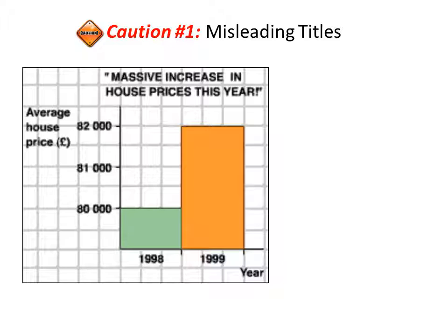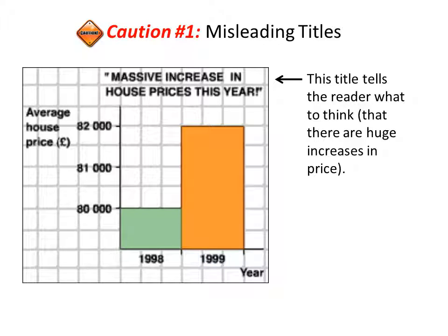The first caution is misleading titles. Take a look at this first graph — the title says 'massive increases in house prices this year.' This title is basically telling readers what to think: that there are huge increases in price. When constructing a graph, you want to make sure the title is benign. It should just describe what the graph is depicting without putting a bias one way or the other.